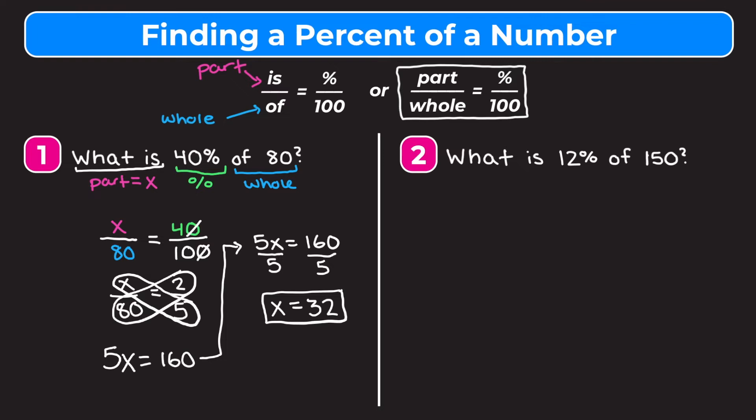Mentally check that this number makes sense. 40% is less than 50%, and 50% of 80 is 40. So 40% of 80 has to be below 40, and 32 is a little bit below 40. So our answer looks like it's at least in the ballpark.